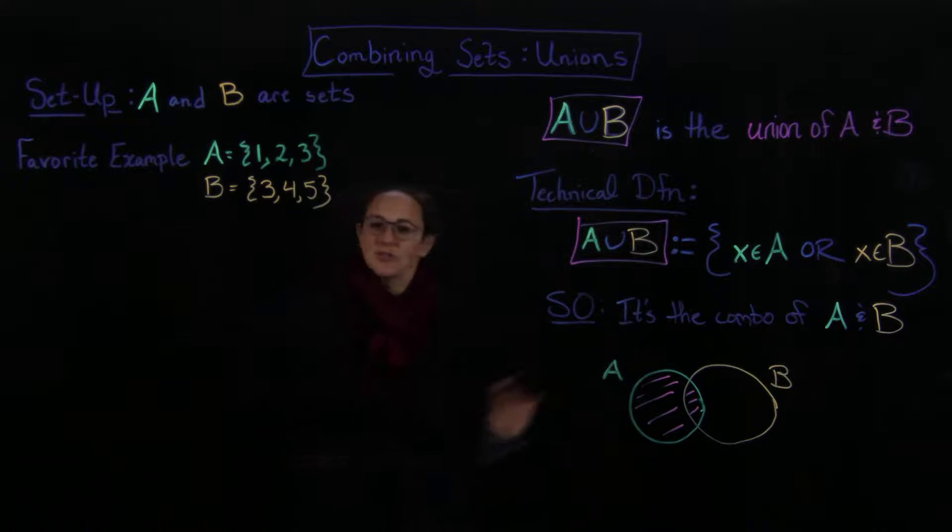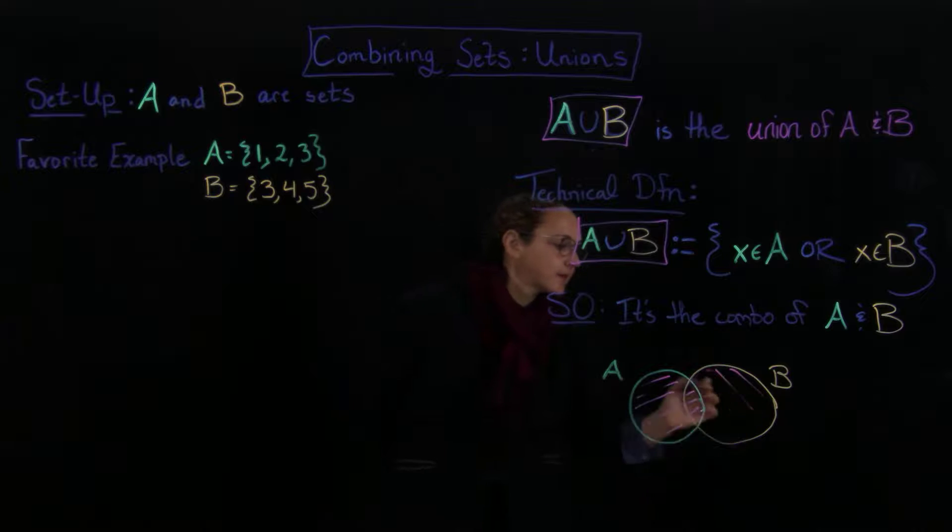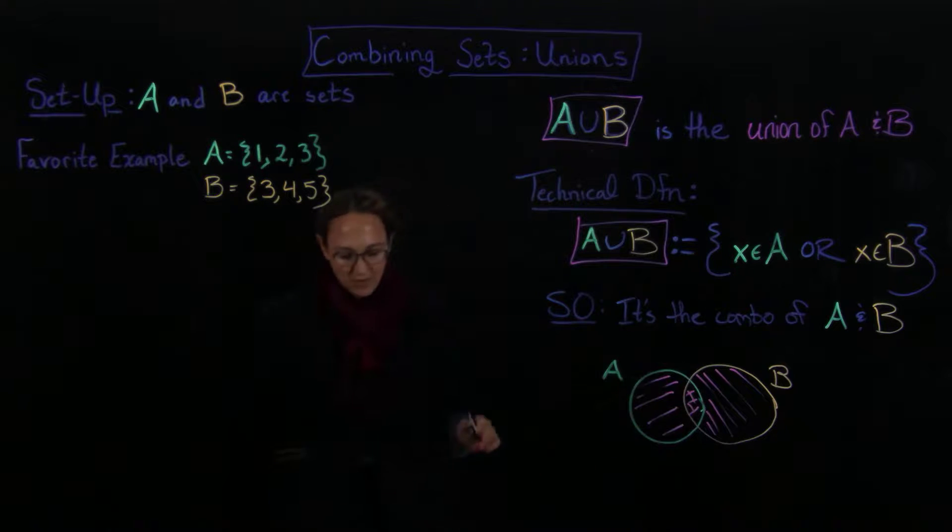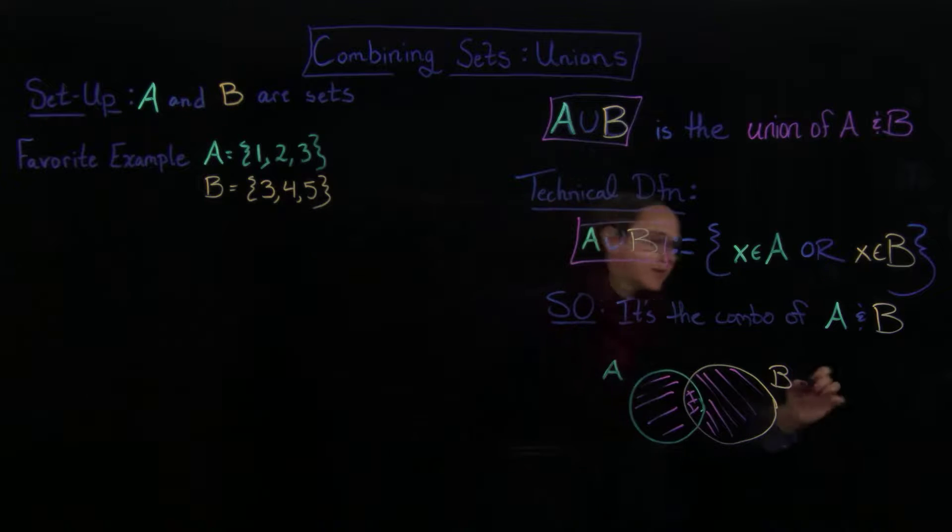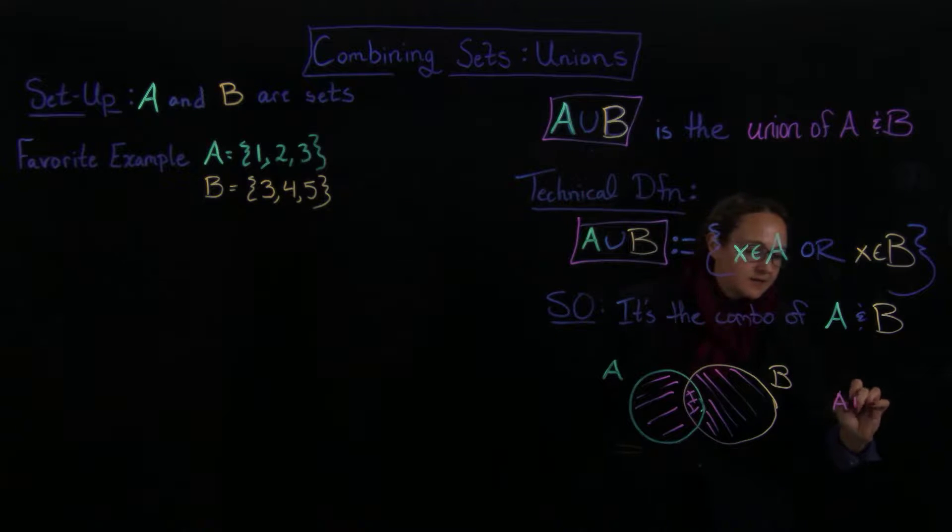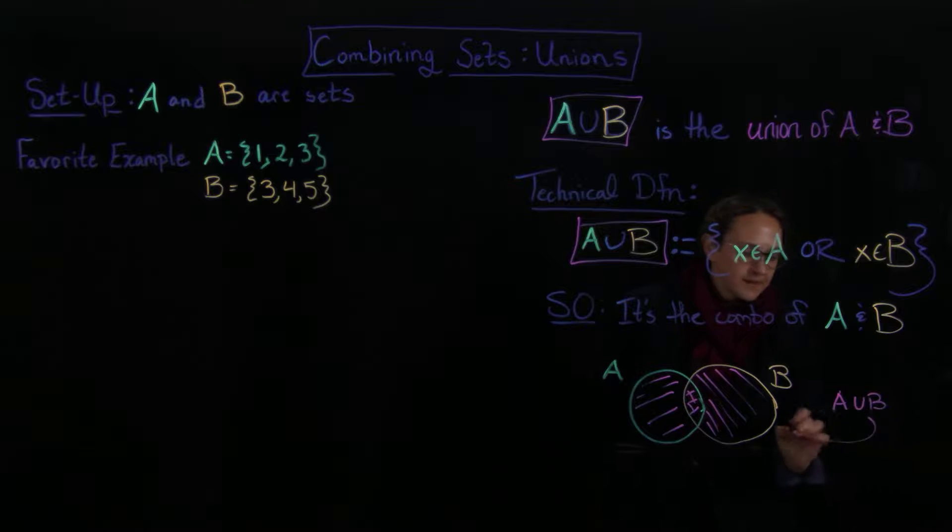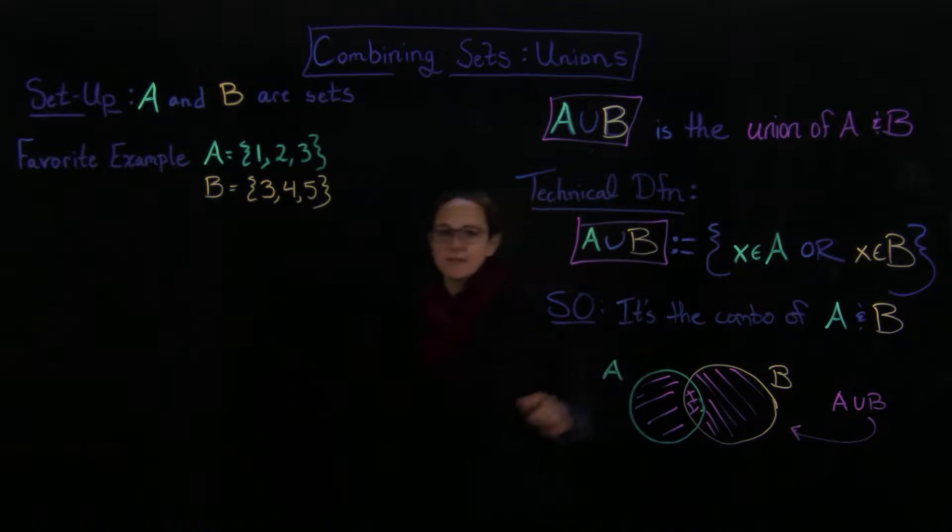But we also have to include, it's also okay if it's in B, so it's also in the union. And it's okay that those are in both. So what I've drawn there, so this is A union B. It only had to be in one of those, and then we're good.